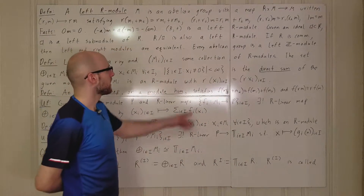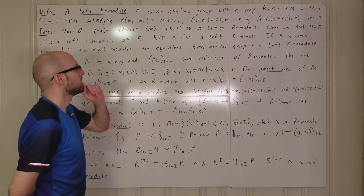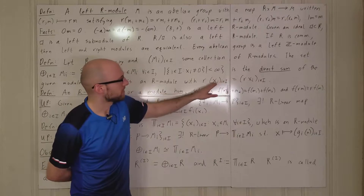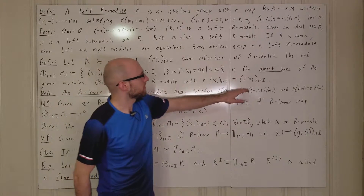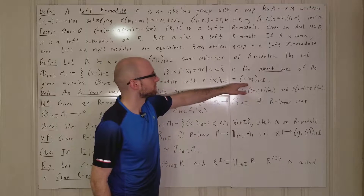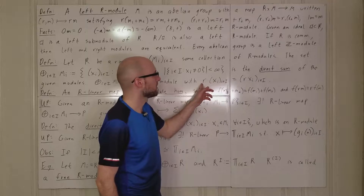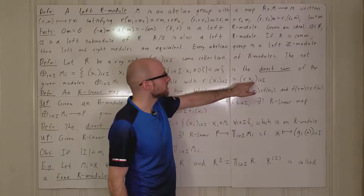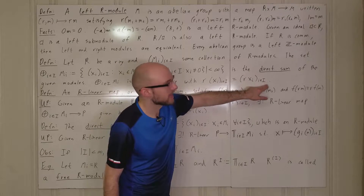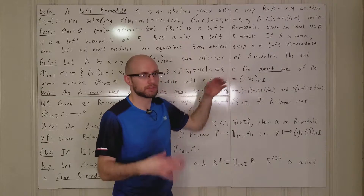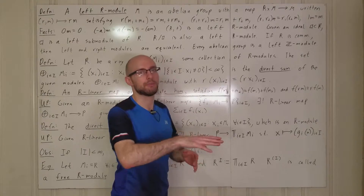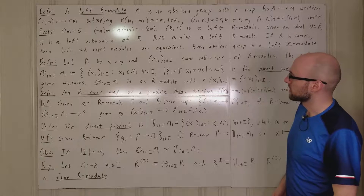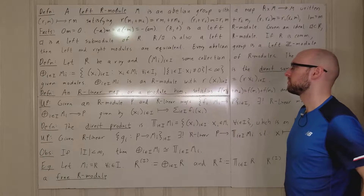The direct sum of the M_i's is an R-module. The way R acts on an element is that you bring it inside each coordinate: r acting on the element gives the element whose i-th coordinate is r·x_i, where that multiplication takes place in the module M_i.